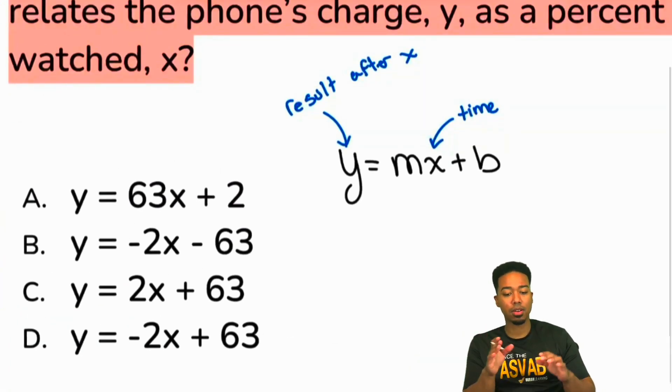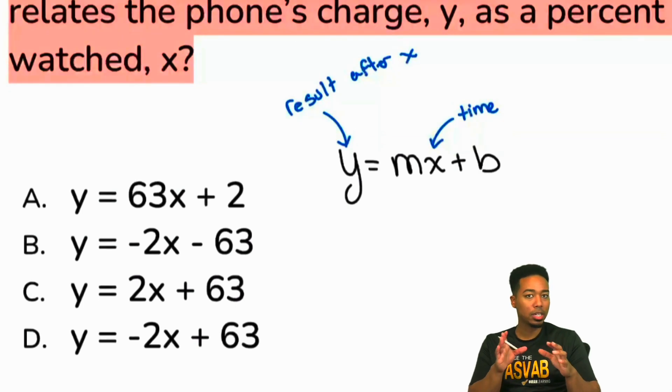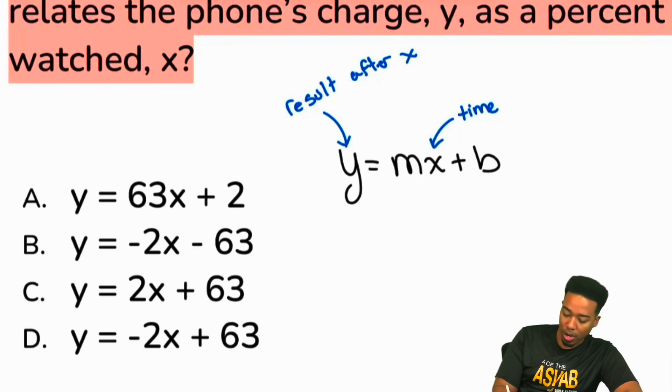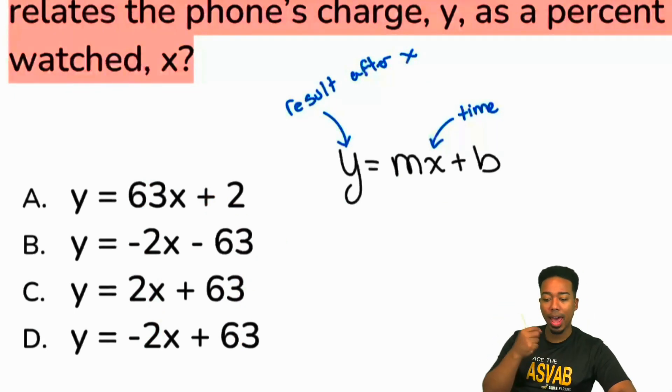Now, from here, notice that we're not looking to figure out what X and Y are. We're looking to figure out what M and what B are. Notice, it's the M and the B. Those are the two letters or variables that actually have something in place for them. Let's understand what the M and the B are.